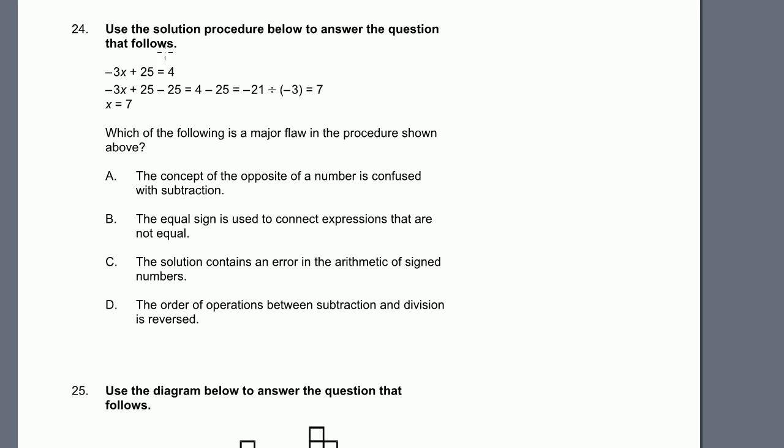We're on problem 24. Use the solution procedure below to answer the question that follows. Which of the following is a major flaw in the procedure shown above? So let's look for some flaws. The way I always like to do is just think about how I would have done it. So if I started with -3x + 25 = 4,